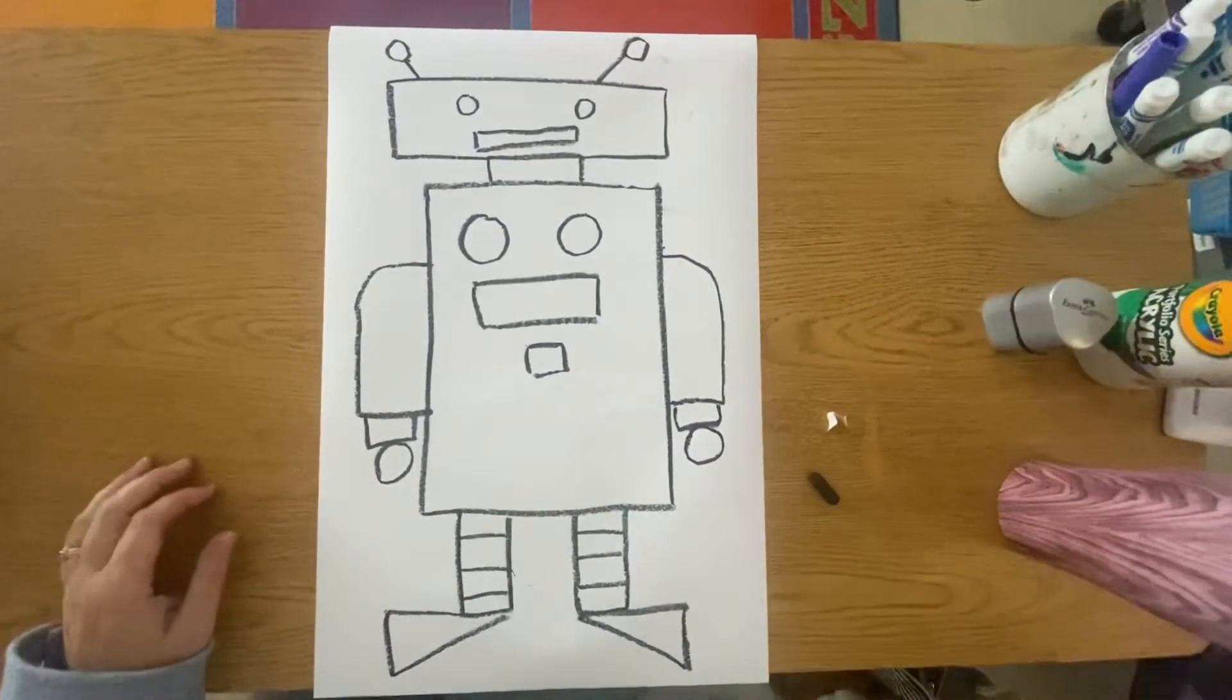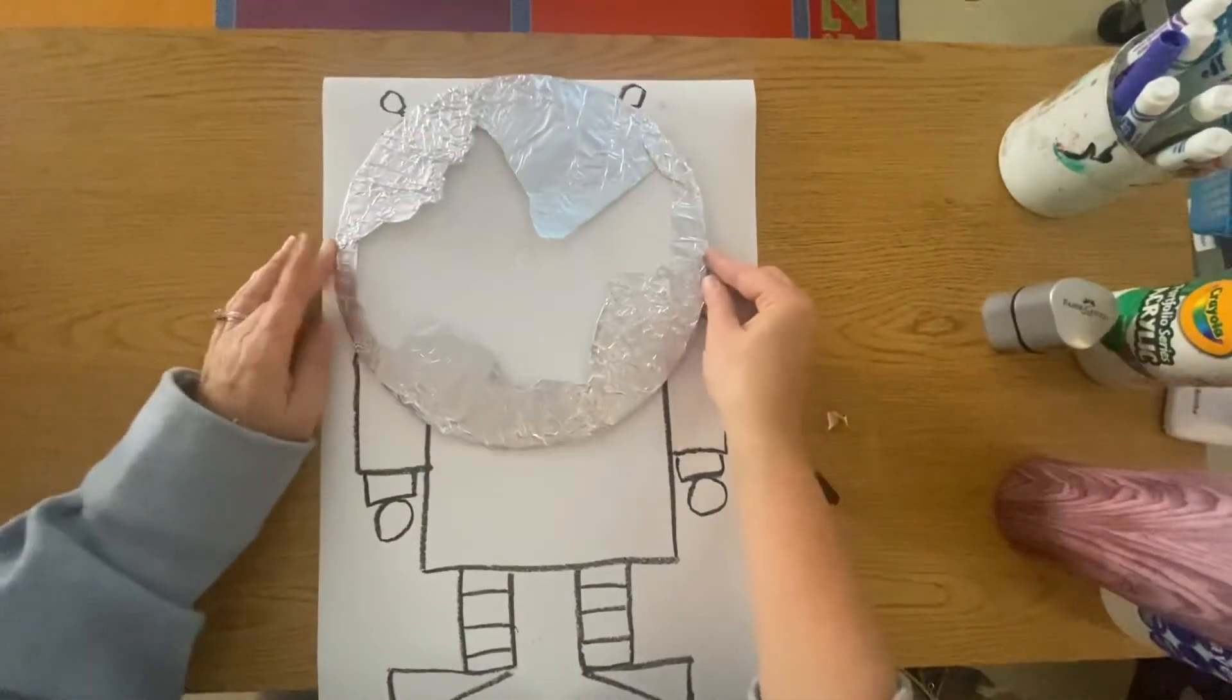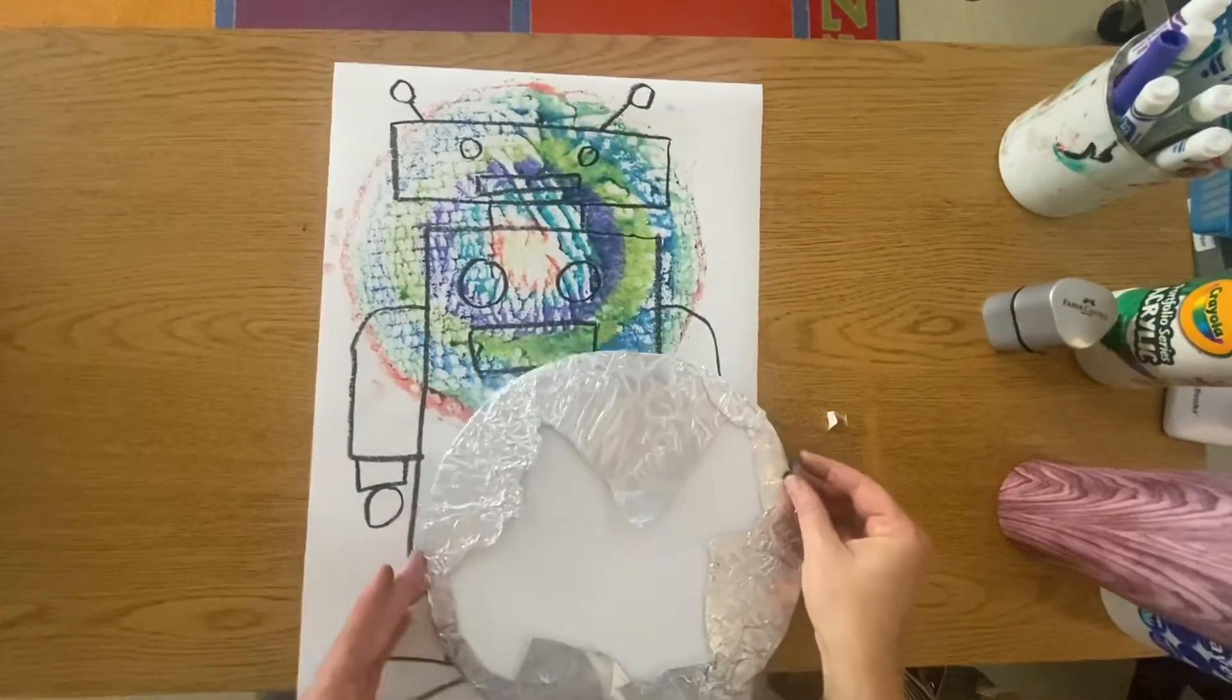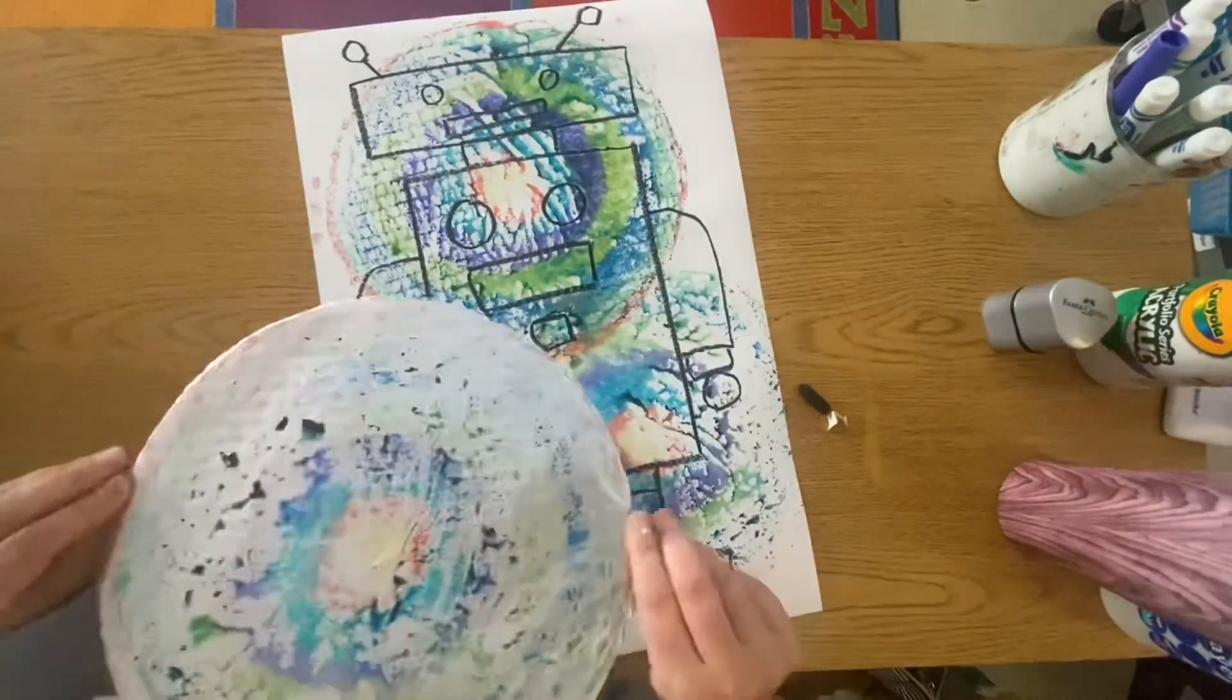Now here comes the fun part. We're going to take a water bottle and spray onto the paper with our robot, place our printing plate on top, and we will see the transfer of ink to our paper as we print the color on top of our robot design.